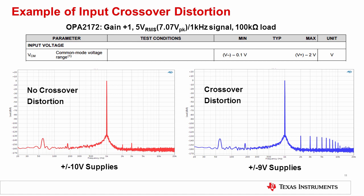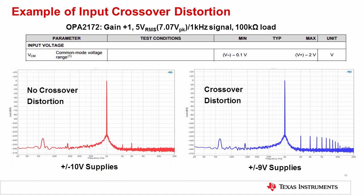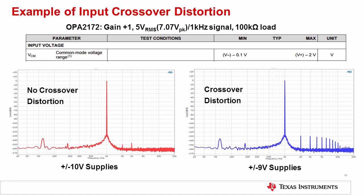Here are measured examples of an op amp output FFT with and without crossover distortion. In this example, an OPA2172 is used in a gain of plus 1 with a 5 volt RMS, or 7.07 volt peak, input signal applied. The crossover region for this device happens about 2 volts from the positive rail. With a 7.07 volt peak input, the signal is about 3 volts away from the positive rail, so this case does not enter the crossover region, and the distortion is very low. The noise floor is about negative 160 dB below the fundamental, and the third harmonic is dominating at about negative 146 dB. Decreasing the power supply voltages to plus minus 9 volts causes many harmonics to be generated because the input sine wave is now less than 2 volts from the positive rail and the input stage is entering the crossover region. The distortion would get worse if supply voltage were decreased further.